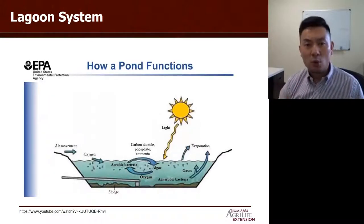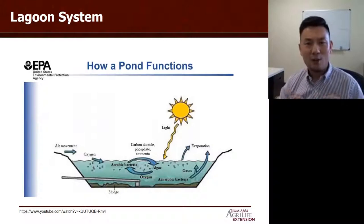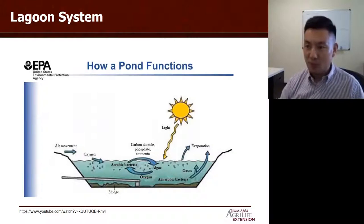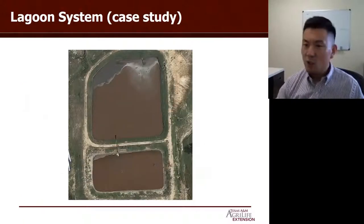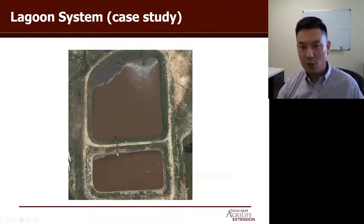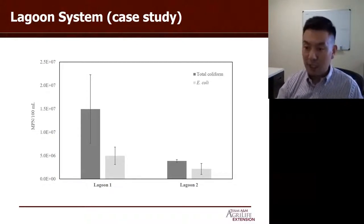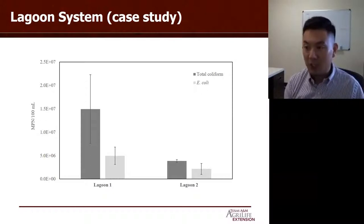Another treatment for manure slurry is a lagoon system. Lagoon systems are commonly used for liquid manure treatment and storage. In Texas we have large land and quite often farms have a lagoon or lagoon system. Here's one of my research sites. At the top is the primary lagoon — lagoon one — and at the bottom is the secondary lagoon — lagoon two. We did quite a lot of work on those lagoon systems to increase treatment efficiency, and our results show the second lagoon further reduces bacterial indicators from lagoon one.